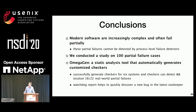In summary, partial failure is a common problem in modern software systems. We conducted a study on 100 partial failures. Based on the insights from the study, we built OmegaGen, a static analysis tool to automatically generate customized checkers to detect and localize partial failures. We evaluated our tool on six popular systems and can detect and localize 18 out of 22 real-world partial failures. The watchdog report also helped to quickly discover a new bug in the latest ZooKeeper.